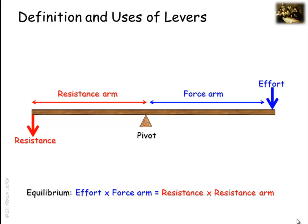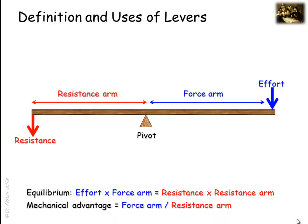It should be emphasized that the force and the resistance refer only to the rotary components of the actual forces — that is to say, the components that are directed at 90 degrees to the lever arm. The mechanical advantage the machine provides is determined by dividing the force arm distance by the resistance arm distance. The mechanical advantage of a lever depends on where the forces are located.